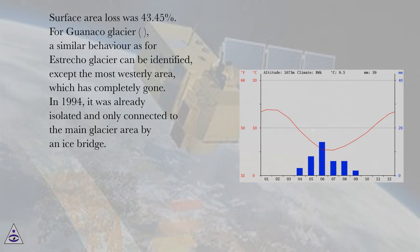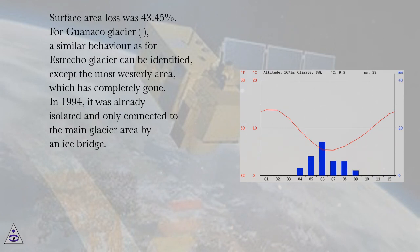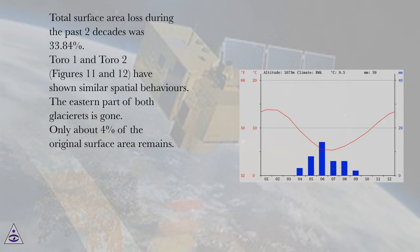For Guanaco Glacier, a similar behavior as for Estrecho Glacier can be identified, except the most westerly area, which has completely gone. In 1994, it was already isolated and only connected to the main glacier area by an ice bridge. Total surface area loss during the past two decades was 33.84%.